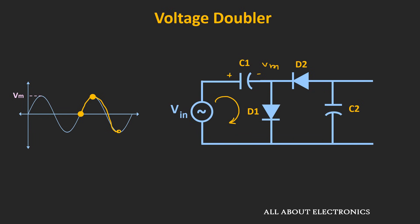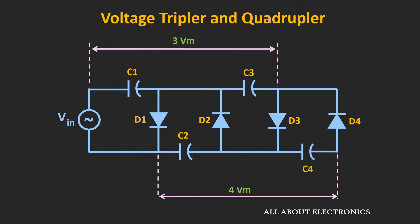Now let's see the working of the voltage tripler and quadrupler circuit. In the voltage doubler circuit, just by adding pairs of capacitors and diodes, it can be converted into the tripler and the quadrupler circuit. If we measure the output voltage between C1 and C3, it will be equal to 3Vm. And if we measure the voltage between C2 and C4, it will be equal to 4Vm, where Vm is the peak amplitude of the AC input signal.